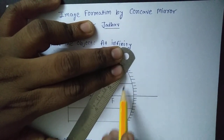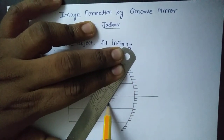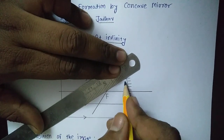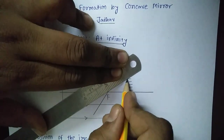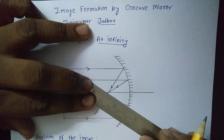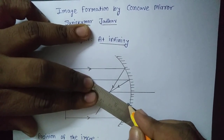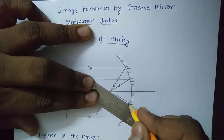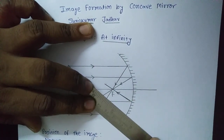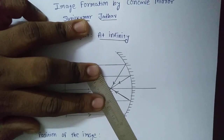As the ray is more slanting, it will reflect more and pass through principal focus F. From here it is also passing through principal focus F. Similarly, for this point it is also passing through principal focus F. This ray is also parallel to the principal axis, so it is also passing through principal focus F.